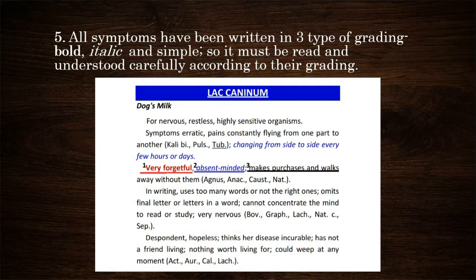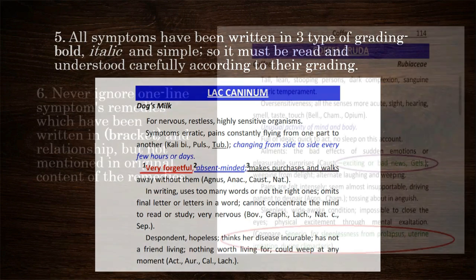Fifth, all symptoms have been written in three types of grading — bold, italic, and simple — so it must be read and understood carefully according to their grading. Grade 1: bold in red colour. Grade 2: italic in blue colour. Grade 3: simple or roman in black colour.